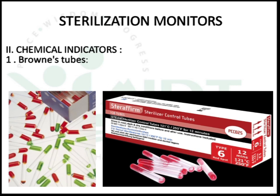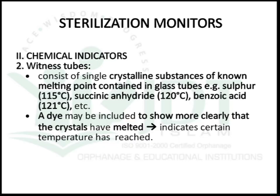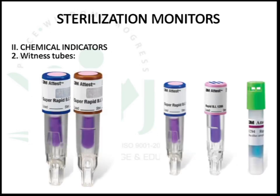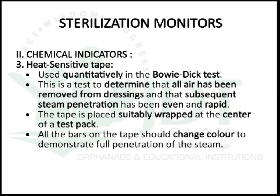The fitness tube consists of a single crystalline substance of non-aqueous melting point contained in a glass tube — for example, sulfur which melts at 115°C, succinic anhydride which melts at 120°C, and benzoic acid which melts at 121°C. A dye may also be included to show more clearly that the crystal has melted, so the color change indicates that a certain temperature has been reached.